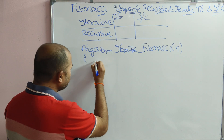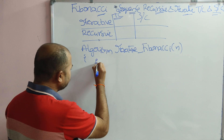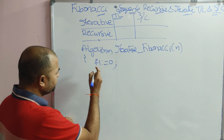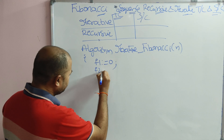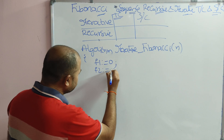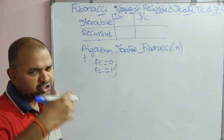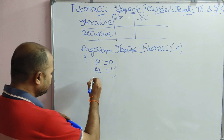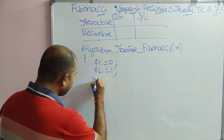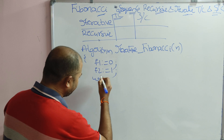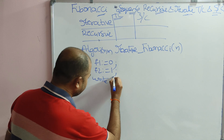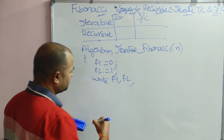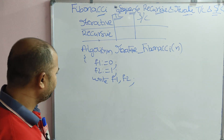The initial value of F1 is 0, so F1 equals 0. Every statement ends with a semicolon. Next, F2 is equal to 1. So we have 0 and 1. Next, we display F1 and F2. For displaying, use write. So write F1, F2.